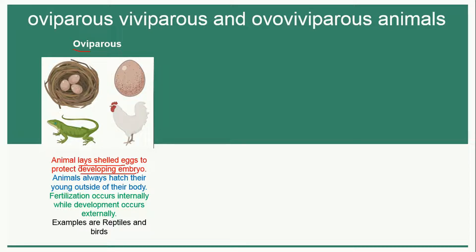These animals lay eggs which have a shell around them, and the purpose is to protect the embryo. The animals will always hatch their young outside of their body — the egg is released out of the body and outside the body the embryo develops into a young one.